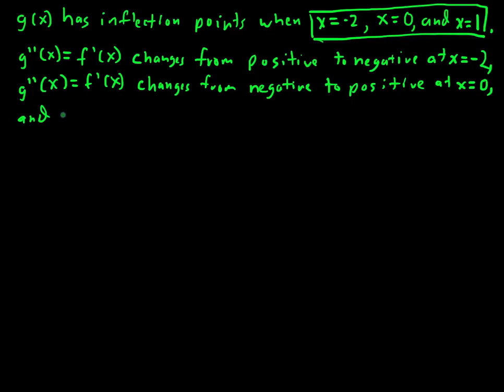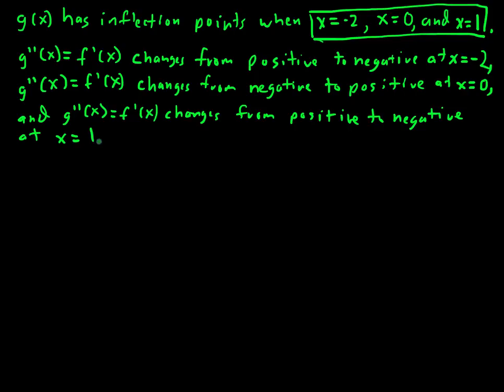And g double prime of x equal to f prime of x changes from positive to negative at x equals 1.